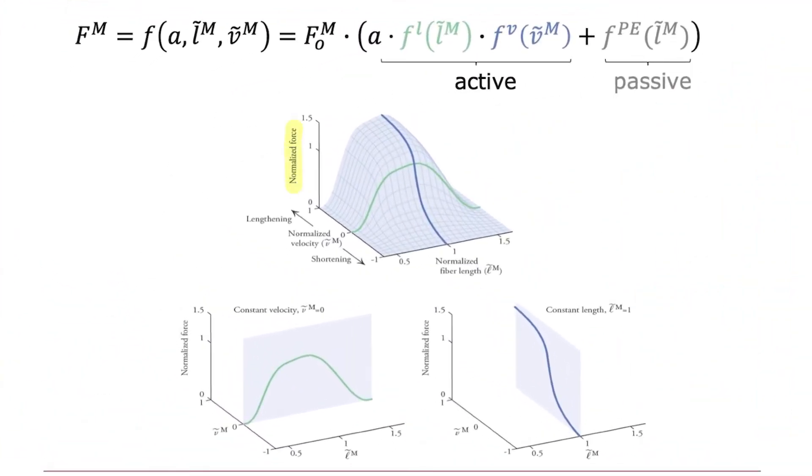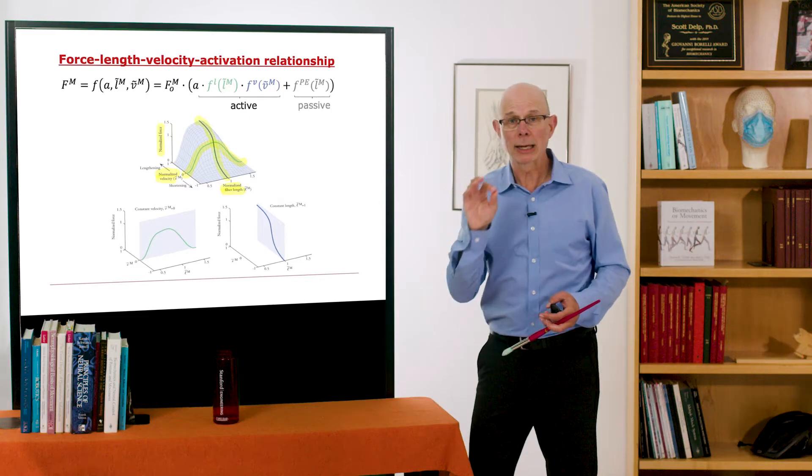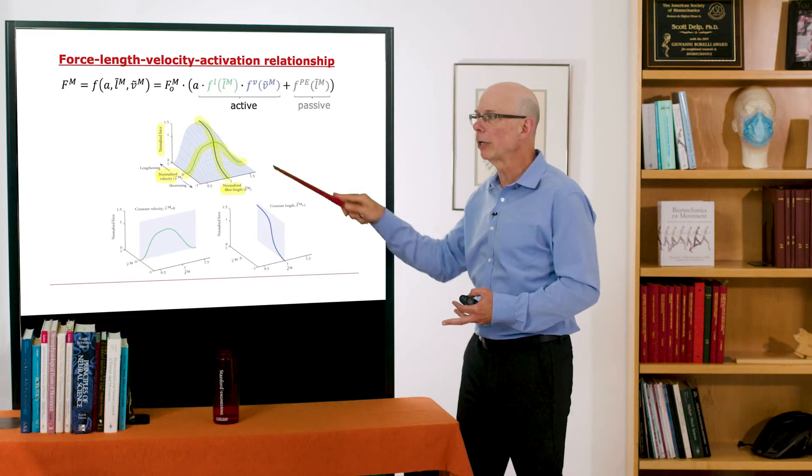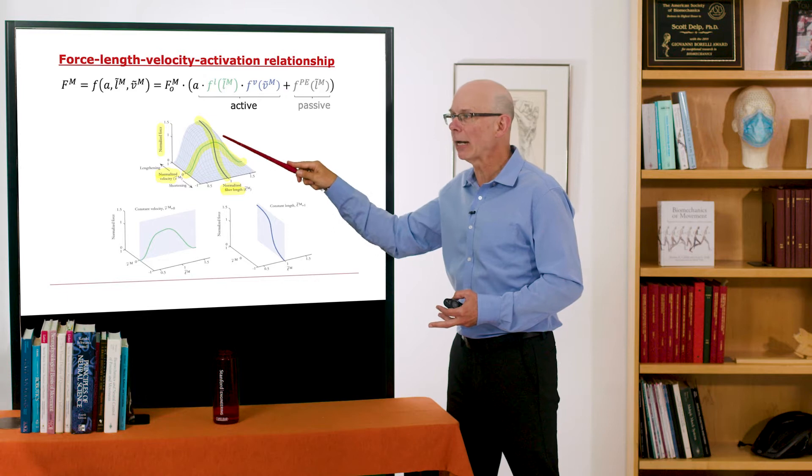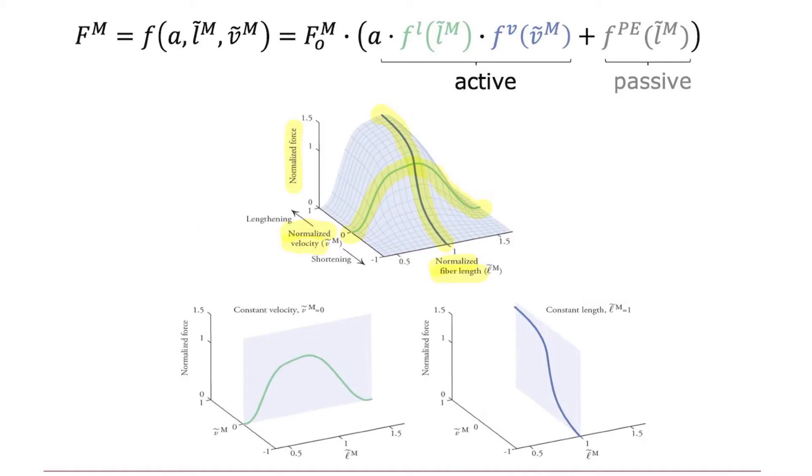And this is plotted here. The force you'll get out of muscle versus its normalized velocity and normalized length. So you can see the force length curve here. You can see the force velocity curve here. So for a given length and velocity, you can go into this curve and for a maximum activation, you can interpolate that. If you slice through it, you can see the force length curve here and force velocity curve here.